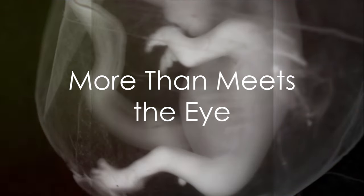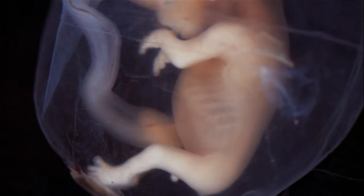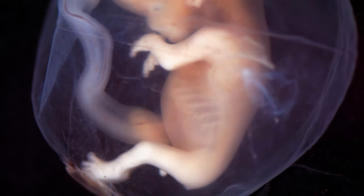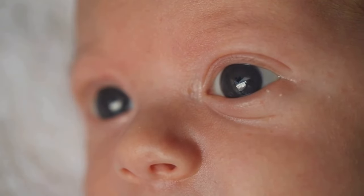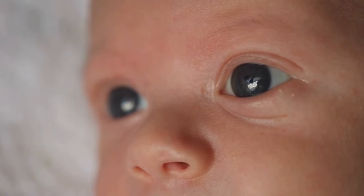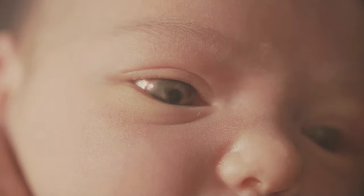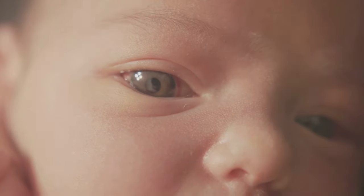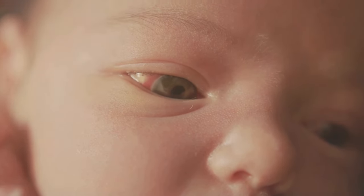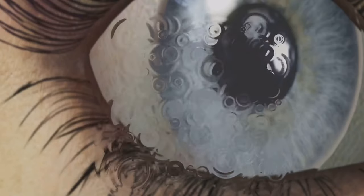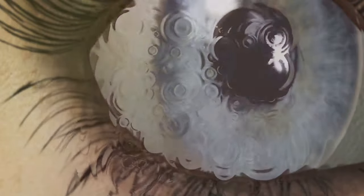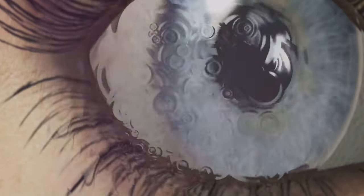Did you know that your eyes started developing just two weeks after conception? That's right, even before you're the size of a pea, your eyes begin their incredible journey. It's a process that's as fascinating as it is complex. The eyes are one of the first things to develop in an embryo. They start as tiny specks of tissue, and over time they transform into one of the most intricate organs in the human body. This process of eye development continues even after birth, as the eyes continue to grow and change throughout childhood.